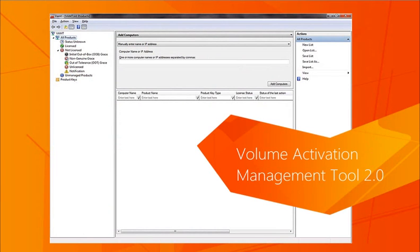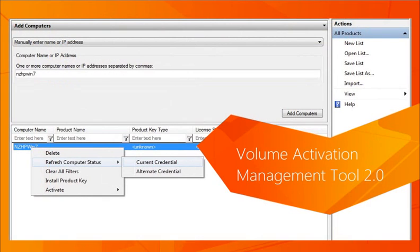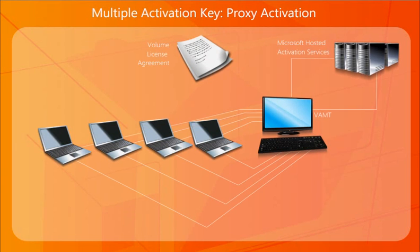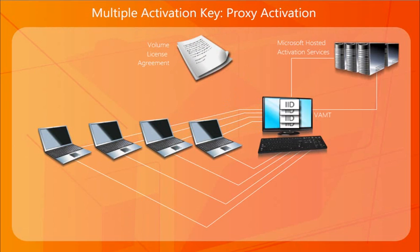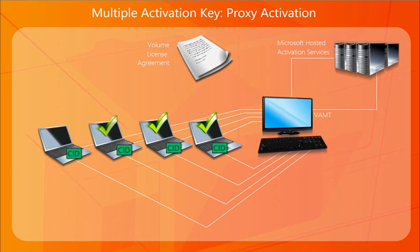The second option to activate MAK is by proxy using Volume Activation Management Tool 2.0, or VAMT. VAMT is a centralized activation request on behalf of multiple computers with one connection to Microsoft. In MAK proxy activation, VAMT installs a product key on a client computer, obtains the installation ID from the target computer, sends the ID to Microsoft on behalf of the client, and obtains a confirmation ID. Then the tool activates the client by installing the confirmation ID. Note that VAMT also supports MAK independent activation by triggering activation on computers with MAK keys installed.